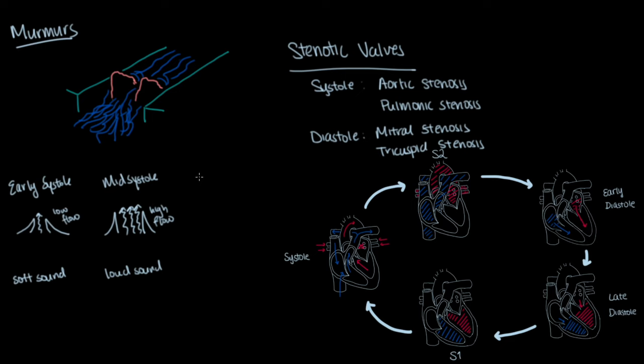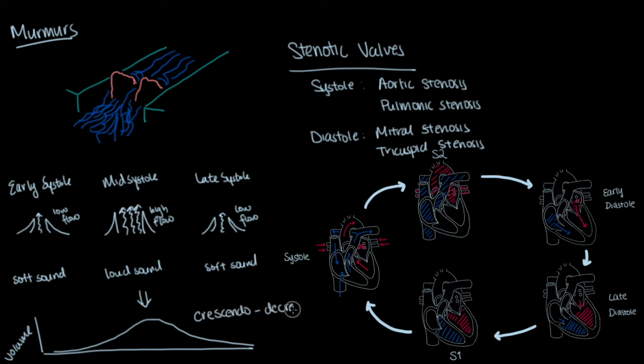As the blood nears completion of being ejected from the ventricles, less blood flows through the valve, thus decrescendoing down back to a softer sound. A similar sound can be generated during diastole when the ventricles relax to pull blood through stenotic mitral or tricuspid valves.